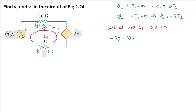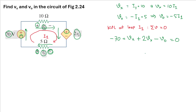For the dependent voltage source, the current enters the positive terminal, so the sign is positive and the voltage is 2Vx. For the 5-ohm resistor, the current comes from the negative terminal so the sign is negative and the voltage is V0. All components sum to zero.